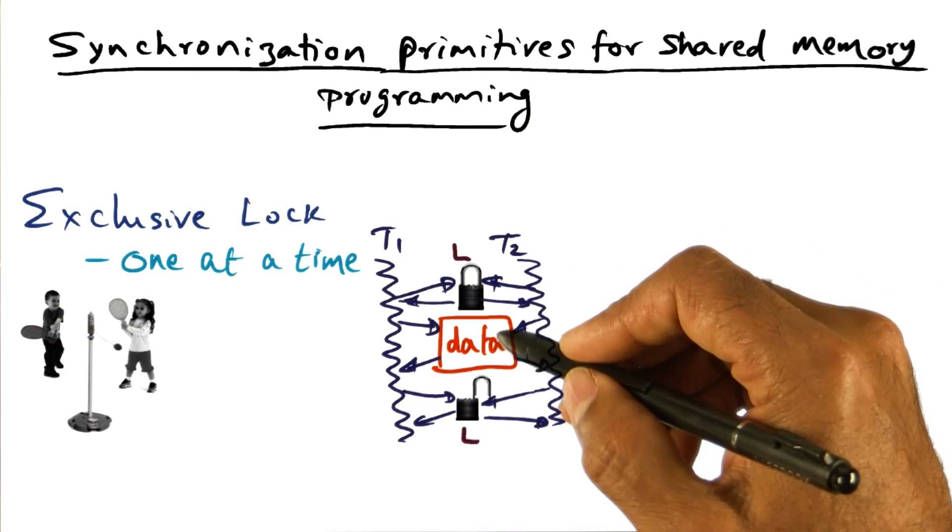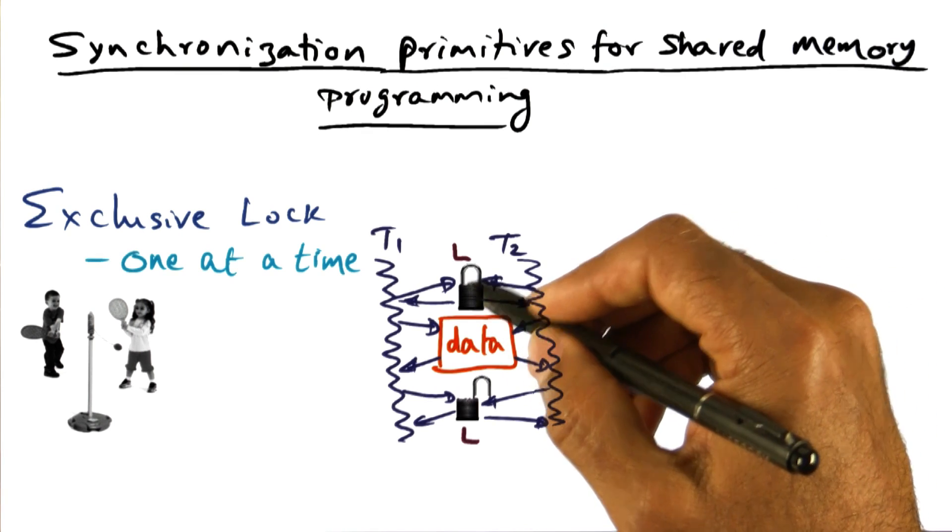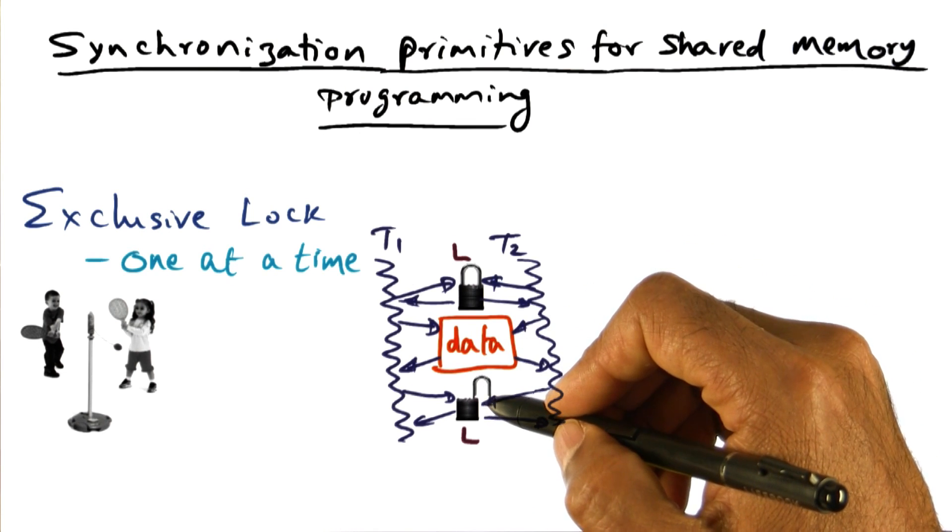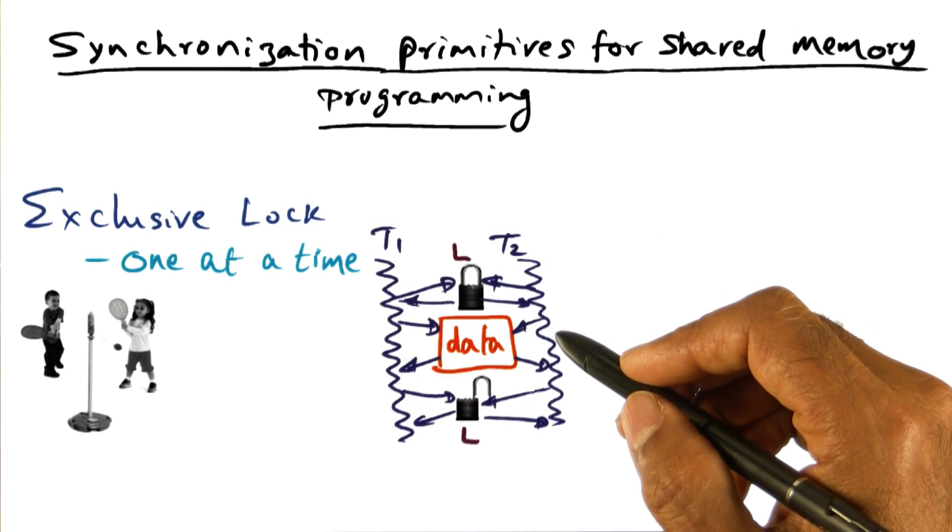And similarly, if another thread wants to read the data and wants the assurance that nobody is going to be modifying this data while it is reading it, it can get an exclusive lock, access the data, read it, and then release it. That's the idea behind mutually exclusive lock.